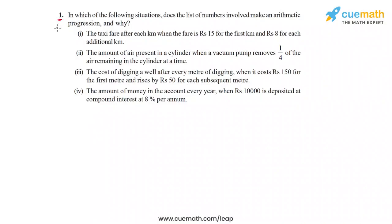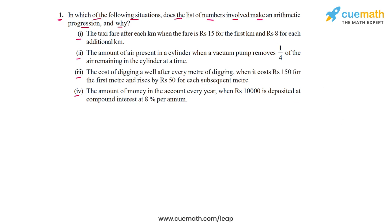In question 1 of this exercise, the problem statement says: in which of the following situations does the list of numbers involved make an arithmetic progression and why? So 4 parts are given to us. In each situation, we will get a list of numbers and we have to determine whether that list of numbers forms an arithmetic progression or not.